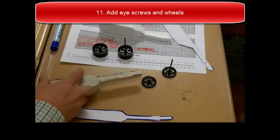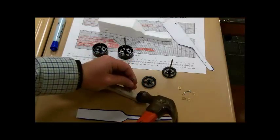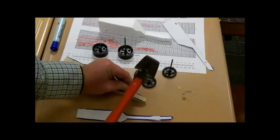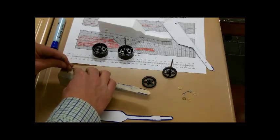Step 11, this is where you will add your eye screws and washers. First thing, take a nail and tap in a small dent or hole. You don't have to go the whole way through.